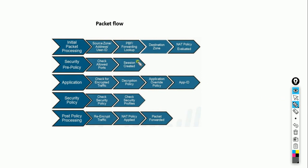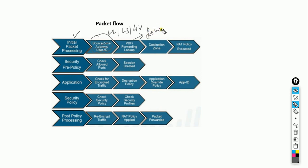This is the brief packet flow. The packet came into the ingress interface and all information was extracted: layer 2, layer 3, and layer 4. It came to know the source zone, address, and user ID. The second step is the forwarding lookup, which is performed in the slow path.